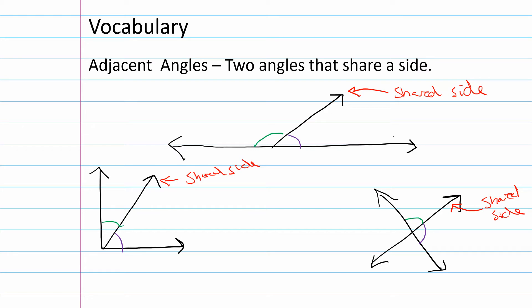On the vertical angle example, there are many adjacent angles. This blue is adjacent to this purple, and this becomes the shared side. The yellow is adjacent to the green, and this is the shared side. So there are a lot of adjacent angles when two lines intersect. Adjacent just means next to each other — they are side by side, like neighbors.